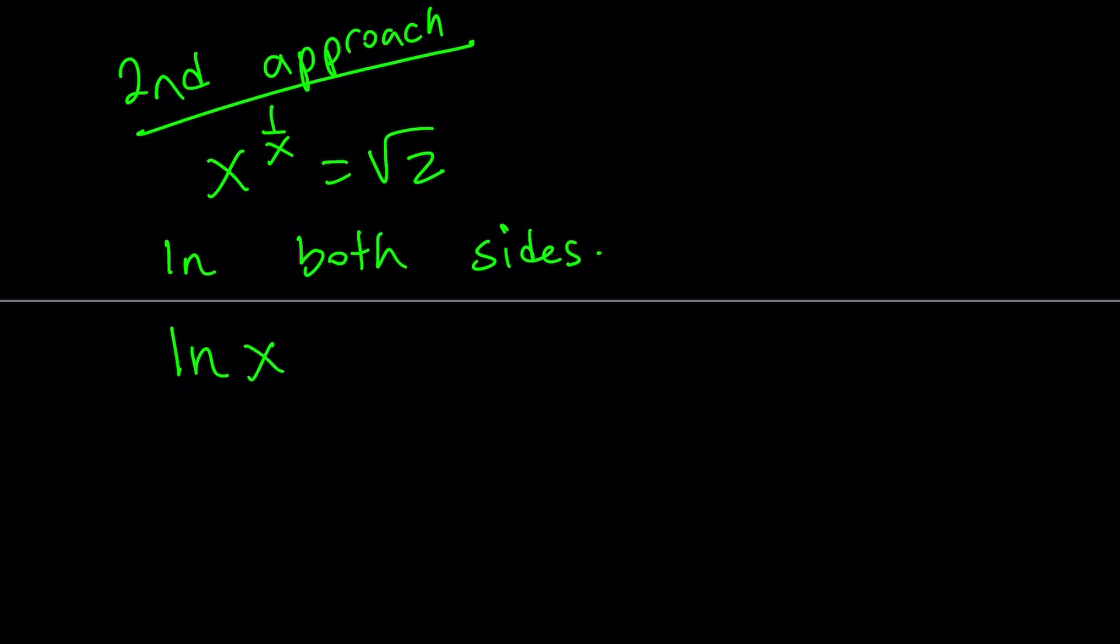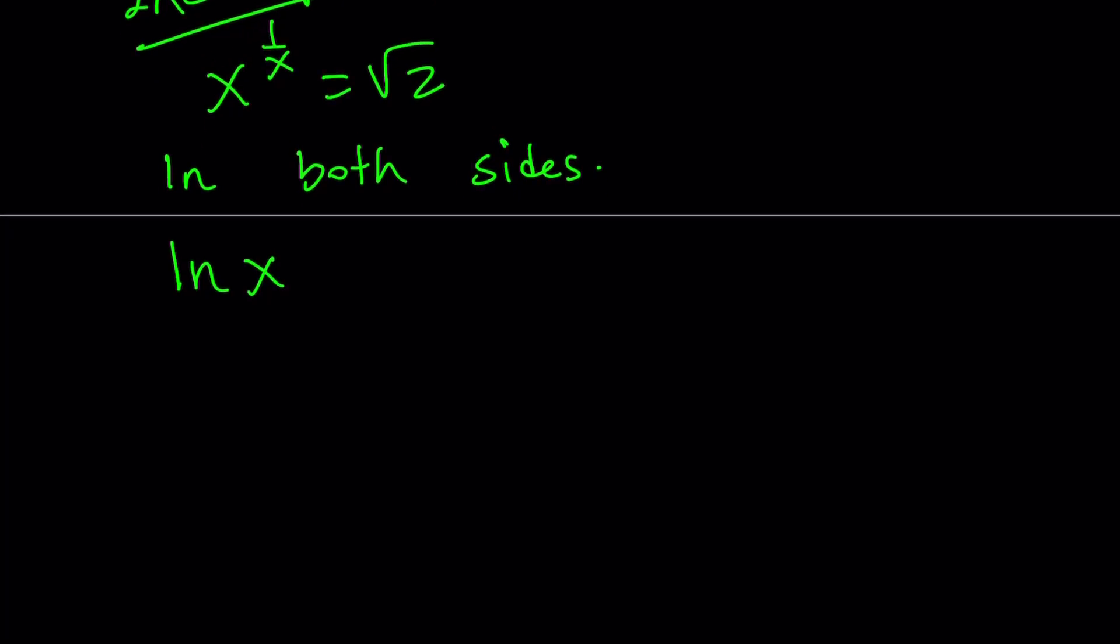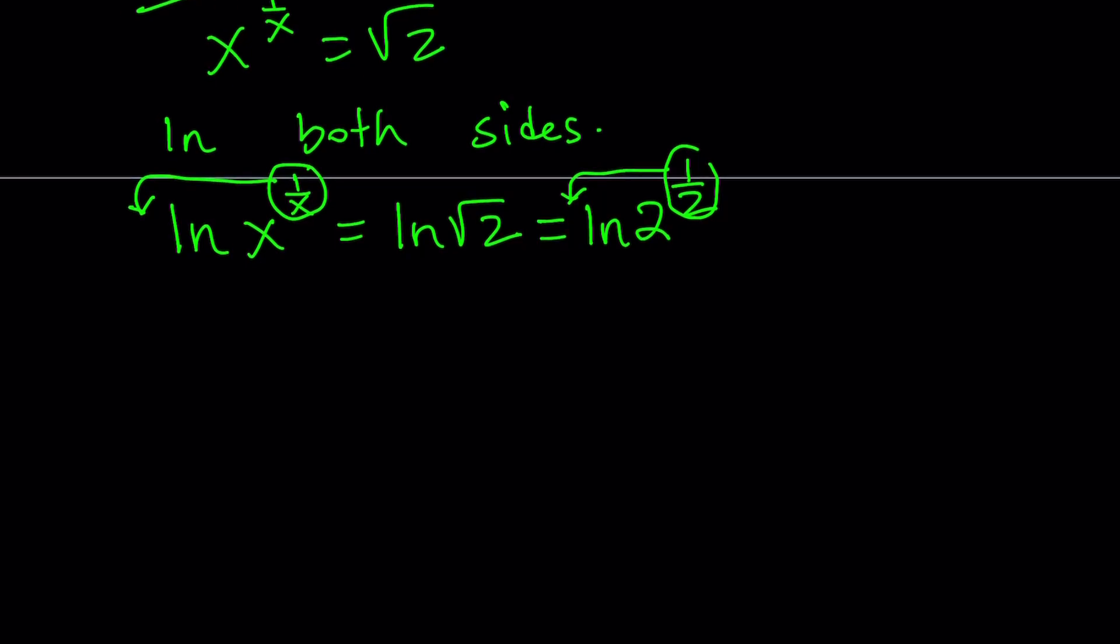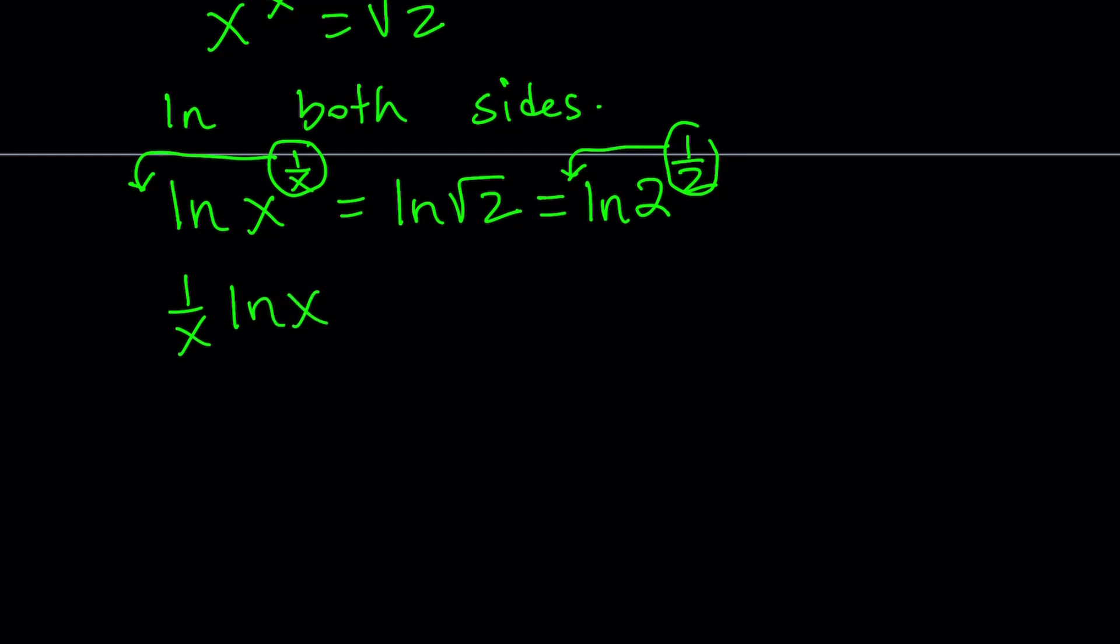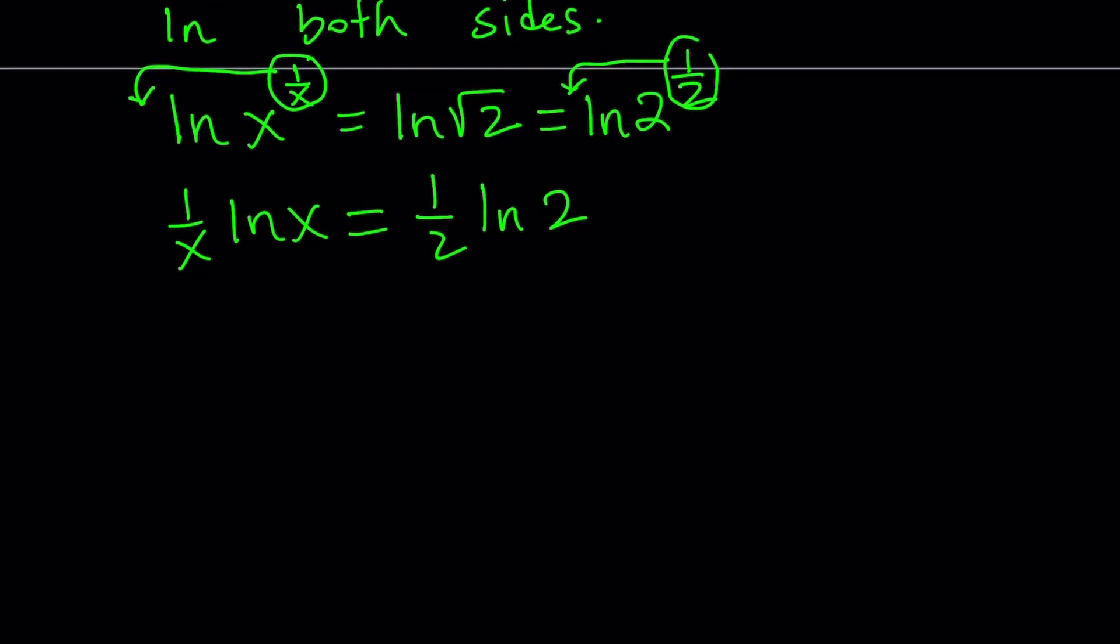If we do ln x to the power of one over x equals ln square root of two, let's go ahead and use properties of logarithms. We can move this one over x here. That just becomes a coefficient. Square root of two can be written as two to the power one half. We can simplify this a little bit more to make it nicer because we said we were going to get rid of the exponents. One over x ln x equals one half ln two. Now we can write it as a quotient: ln x over x equals ln two over two.